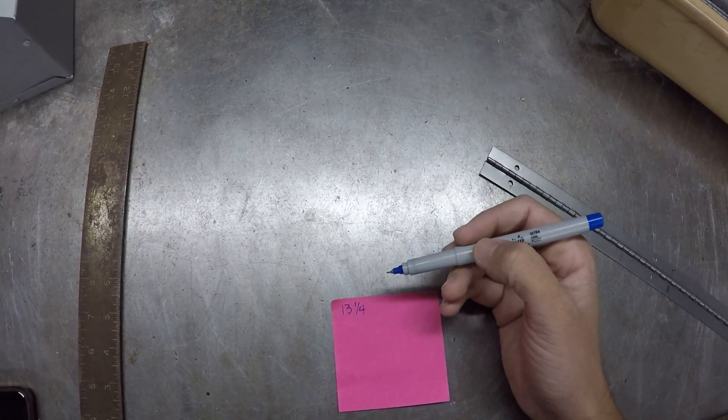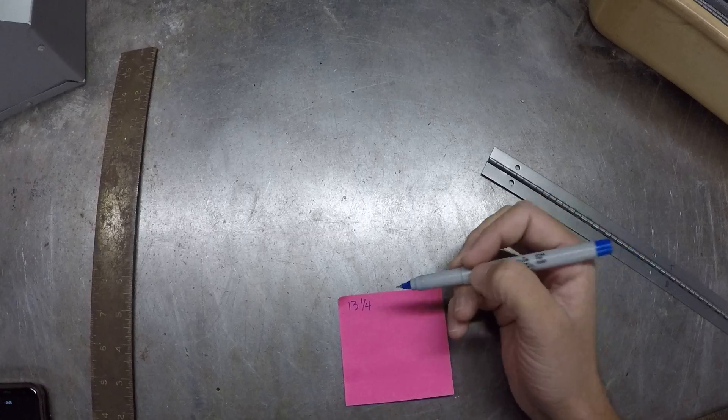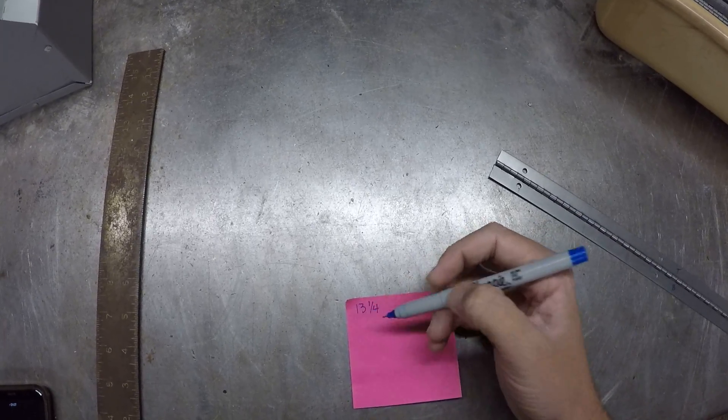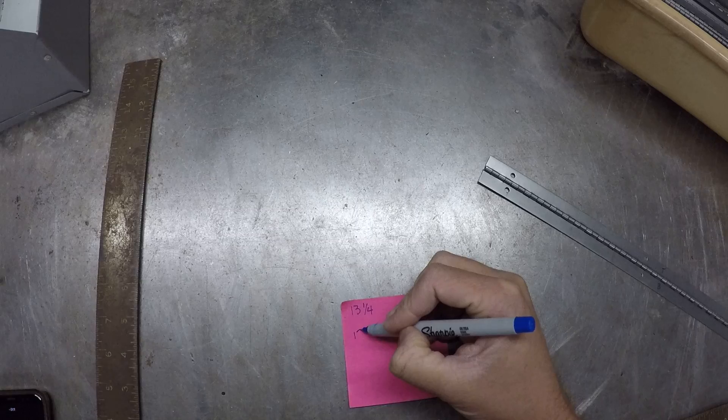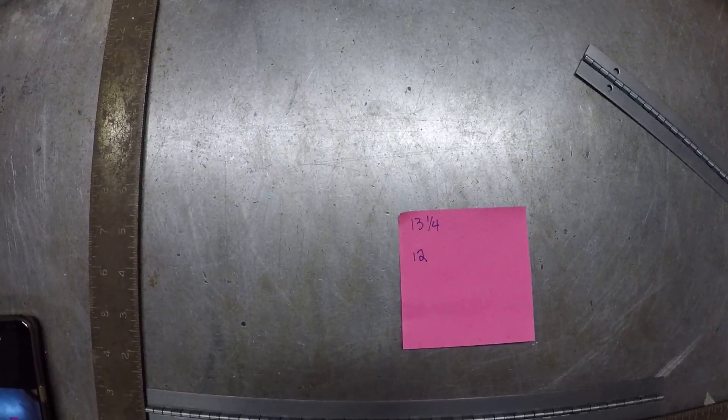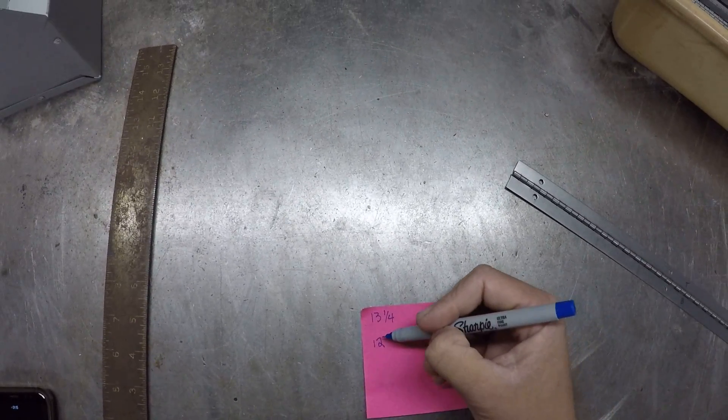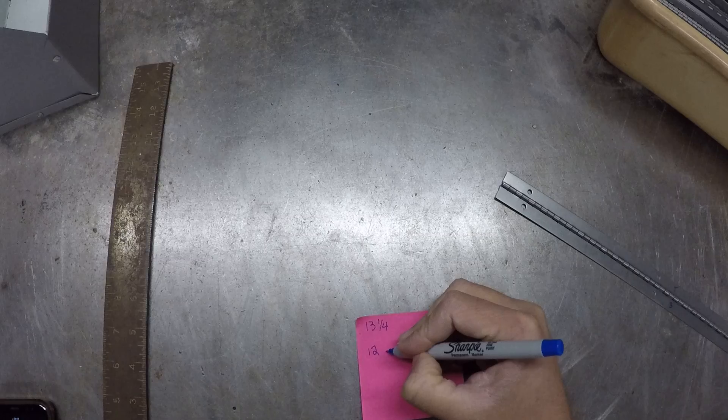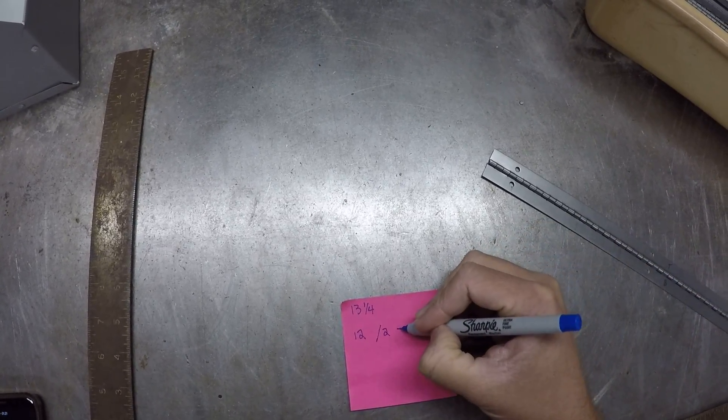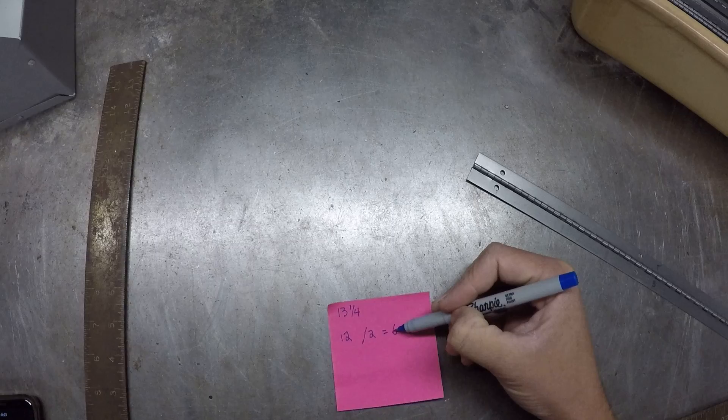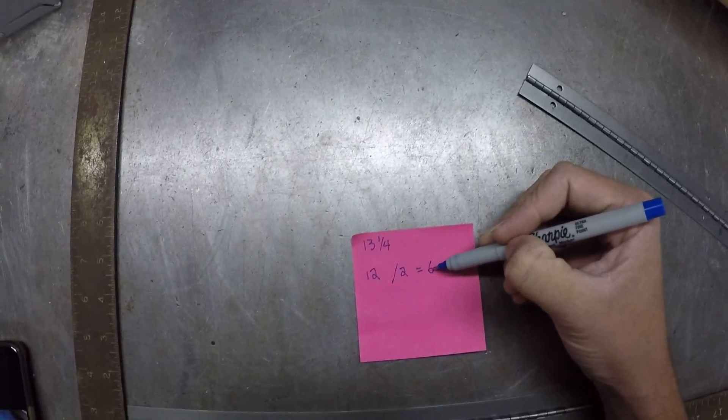So if I were to break this down, the first thing I would do is try and find the closest even number to this that's underneath. So I would find 12 inches because I know I can take 12 inches and divide that by two and that's going to give me six. So I know that half of 12 is six.